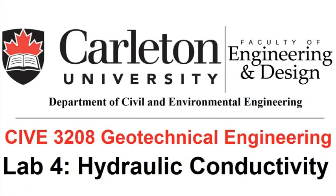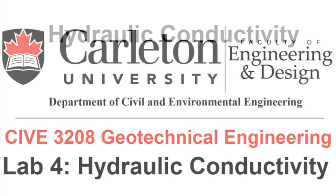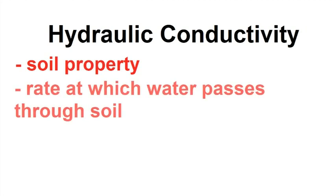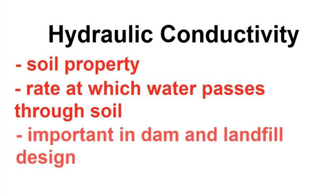This is a tutorial for the Hydraulic Conductivity Lab of the Geotechnical Engineering course Civ E3208. The purpose of this lab is to determine the hydraulic conductivity of a soil sample. Hydraulic conductivity is a property of the soil which determines the rate water will pass through it. It is important to be able to know how to measure hydraulic conductivity, as it is a factor in applications like dam and landfill design.